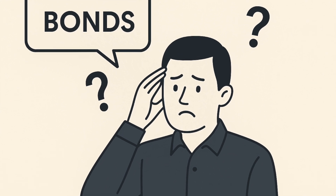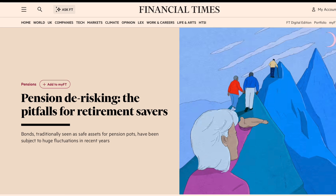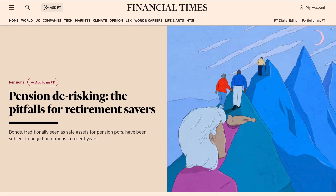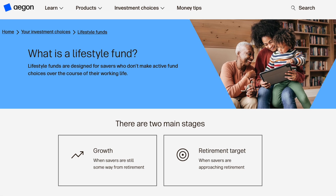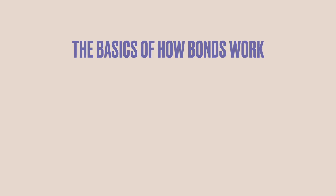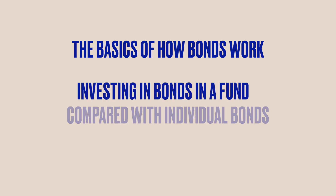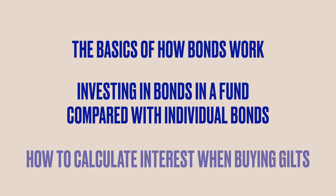Many people find bonds confusing and difficult to understand, but you can't ignore them because your pension will almost certainly contain bonds, particularly if you are in the default fund. In this video, I will explain the basics of how bonds work, the differences between buying individual bonds versus buying bonds in a bond fund, and finally, how you calculate the yield or interest you will get from purchasing individual bonds when you are building a bond ladder.